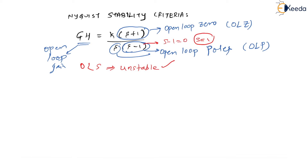If my open loop system is unstable, does it mean that my closed loop system is also unstable? The answer is we don't know — we need to check. From time domain analysis, we know the characteristic equation, which is 1 plus GH equal to 0.